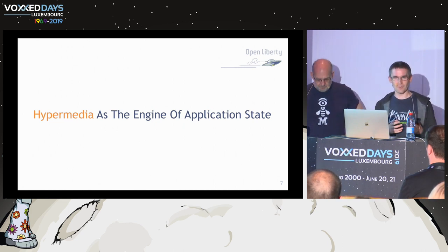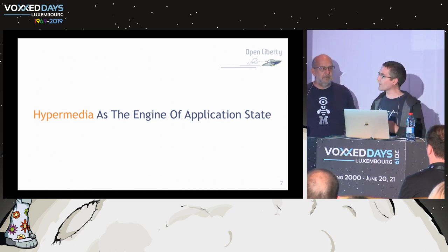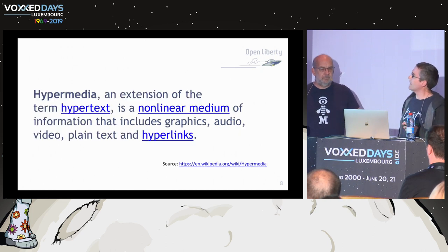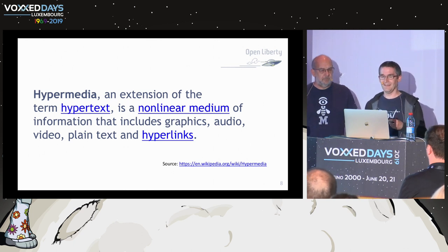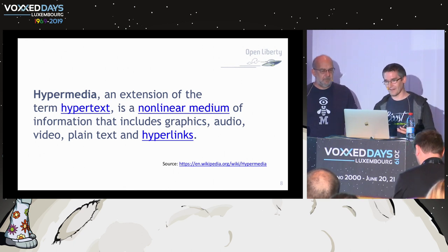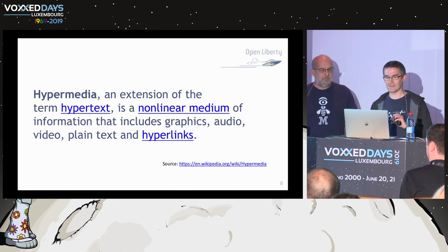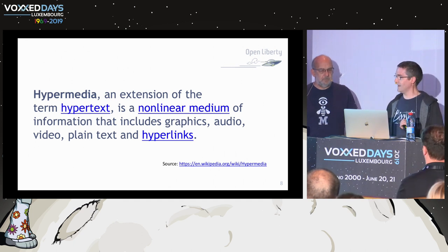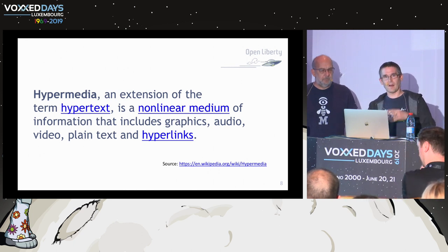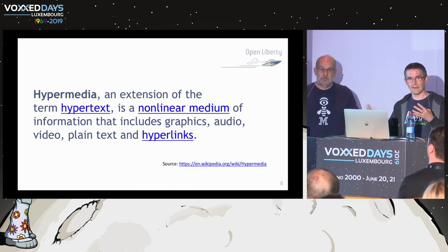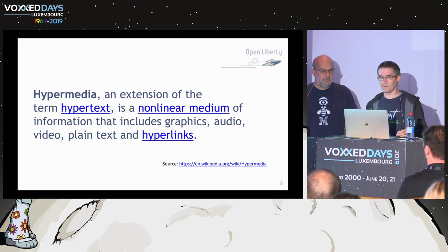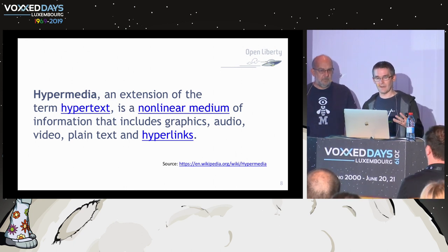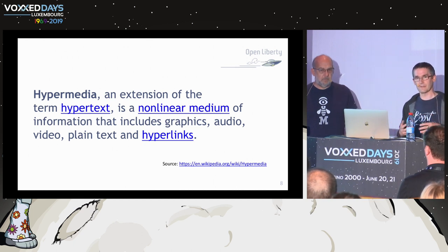I'm personally someone who, when I see 'hyper' or 'meta' or something like that, I instantly have a mental block. I found this on Wikipedia: 'Hypermedia, an extension of the term hypertext, is a nonlinear medium of information that includes graphics, audio, video, plain text, and hyperlinks.' If you think about hypertext as essentially a graph of text — you navigate through this network — and then introduce other types of data such as graphics, audio, video, they're still interlinked. So it's a graph of those types of artifacts. You've got hypermedia instead of just hypertext.